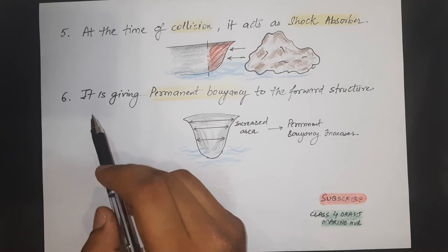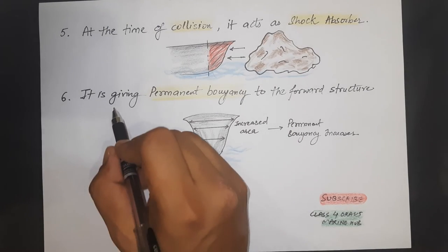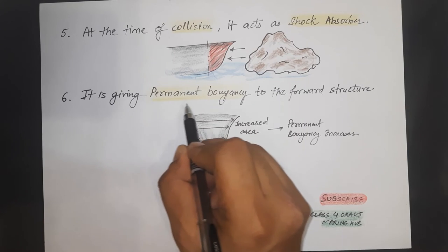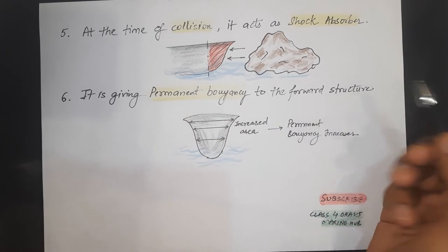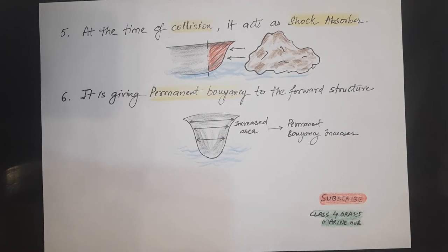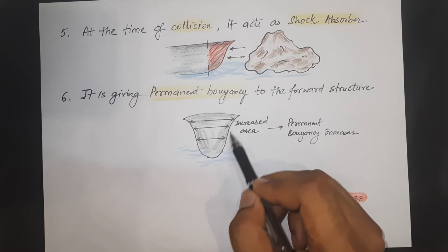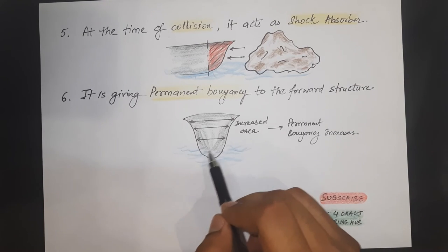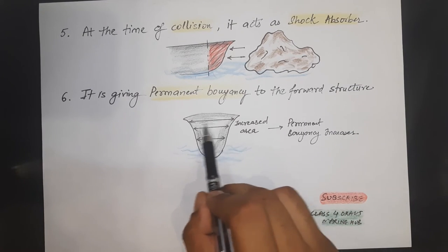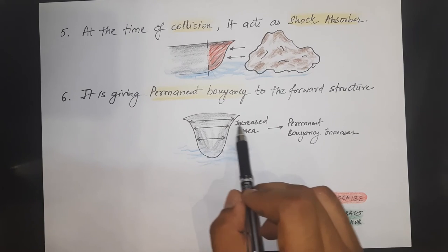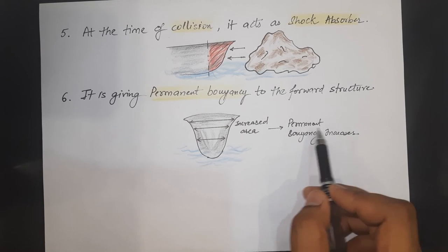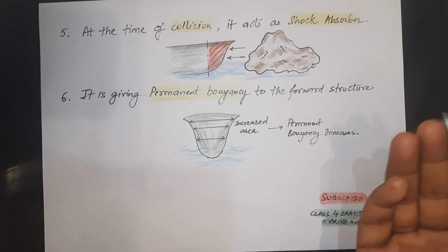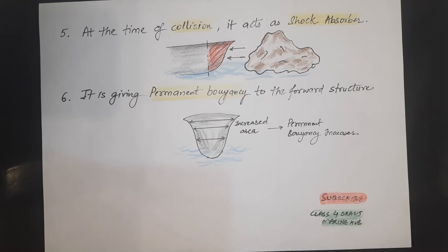The last advantage is that the flare gives permanent buoyancy to the forward structure. It is linked to reserve buoyancy, but since the flare is a permanent structural part of the hull, the increased area in the forward will automatically give permanent buoyancy forward, and the ship will automatically try to be stable.